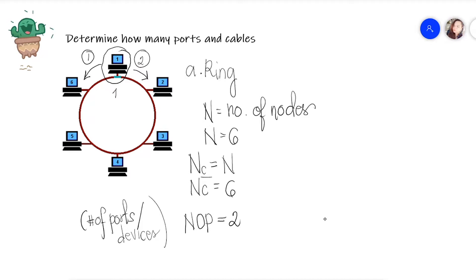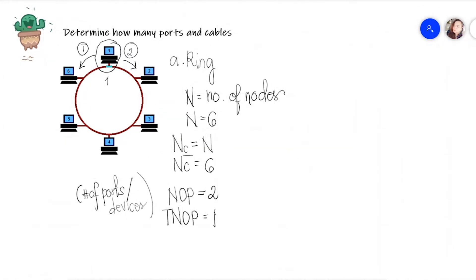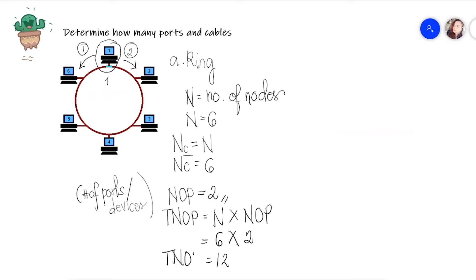Last, we find the total number of ports. The formula is n multiplied by the number of ports per device. Our n is six, and the number of ports per device is two, so the total number of ports is 12. So for ring topology: 12 ports and 6 cables.